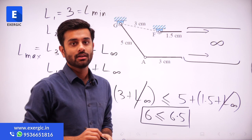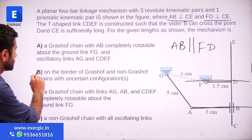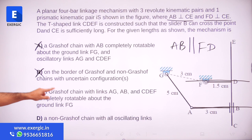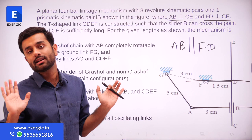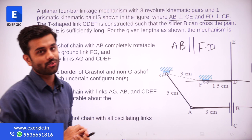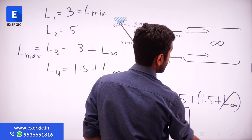Since the Grashoff condition is satisfied, there is no confusion about option B (on the border — that was anyway wrong). It appears to be a Grashoff chain with links AG, AB, and CDEF all completely rotating, which points to option C. Anyone who used the concept of the 3R1P chain got the answer and solved it without any trouble. But once you start analyzing the question more carefully, one problem occurs.